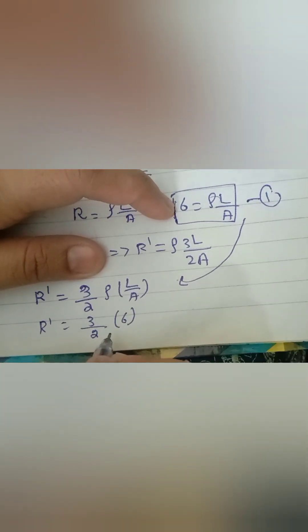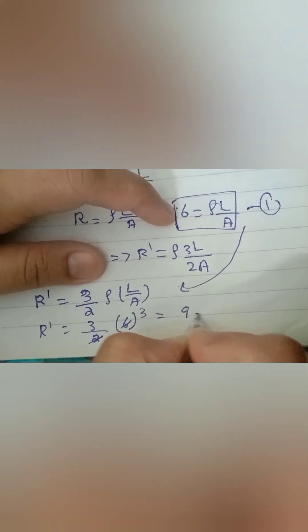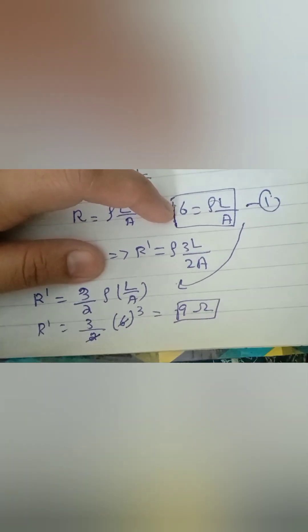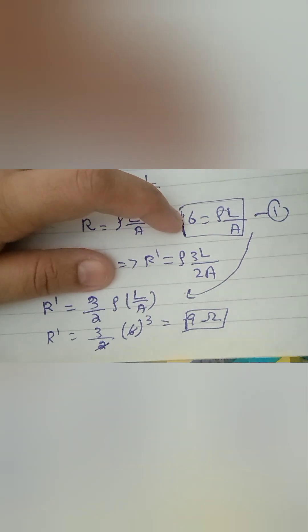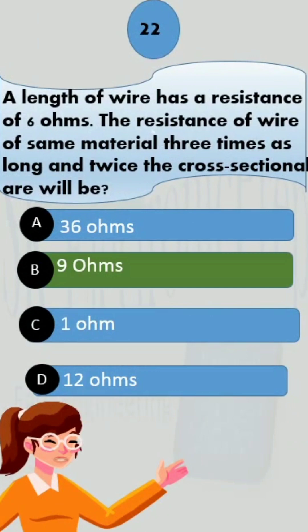Value of ρL/A is 6, so we obtain new resistance as 9 ohms. So this is the answer to the question. And from the answers we can see it is option B.